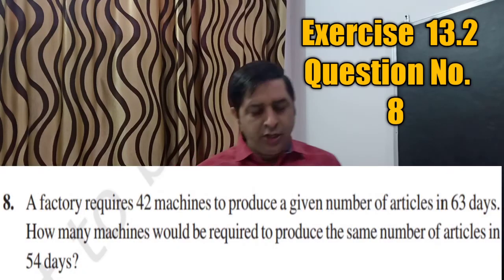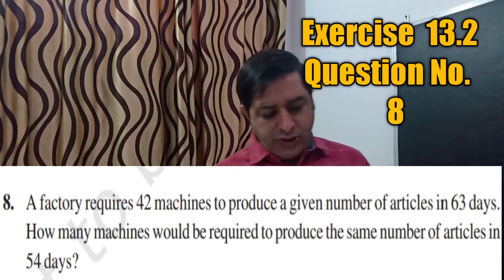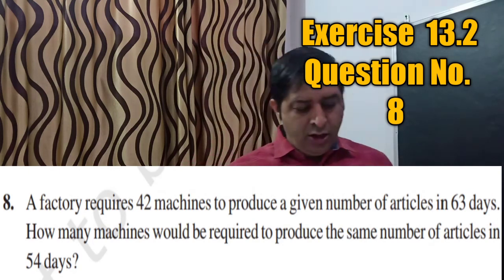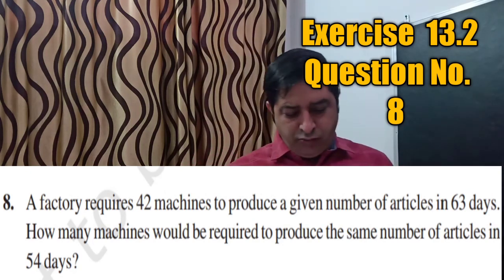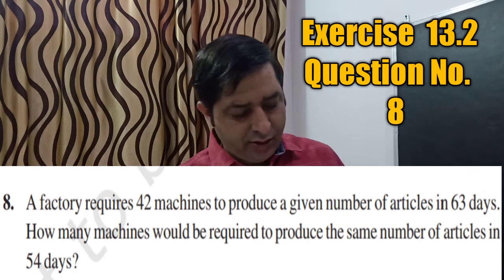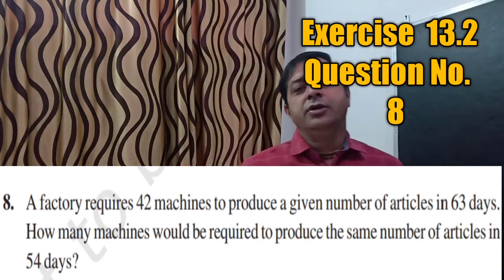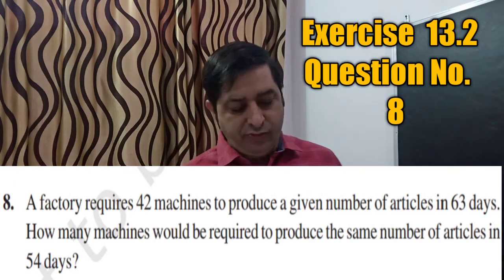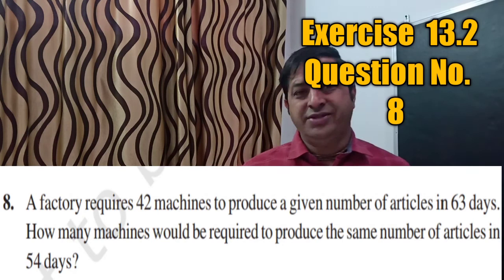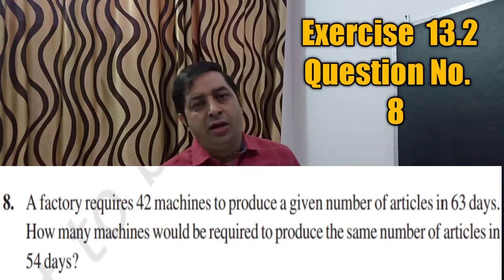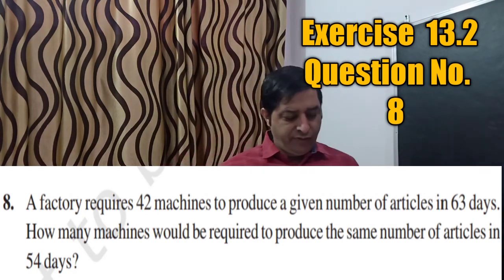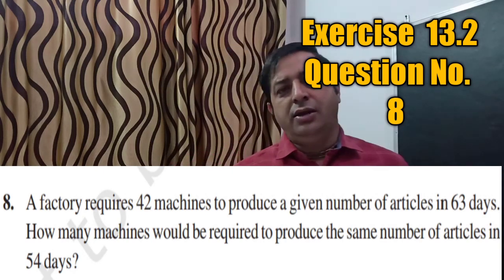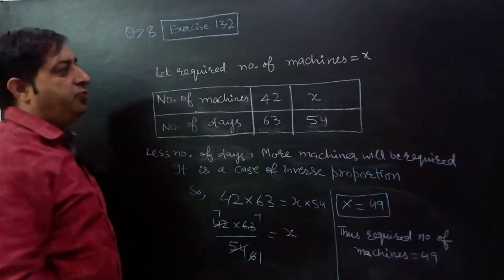Question number eight: A factory requires 42 machines to produce a given number of articles in 63 days. How many machines would be required to produce the same number of articles in 54 days? He is saying that if we have 42 machines and have to produce a definite number of articles in 63 days, then if we have to produce the same articles in 54 days, how many machines will be required? Let's see its solution. Number eight, exercise 13.2.